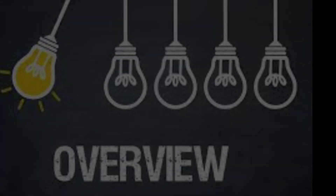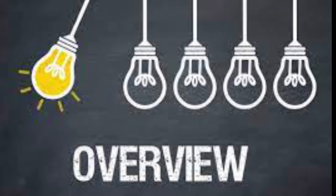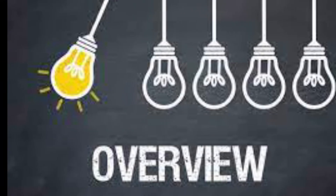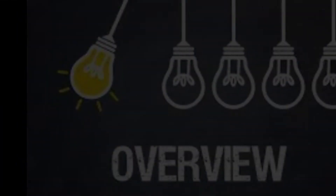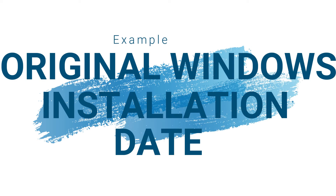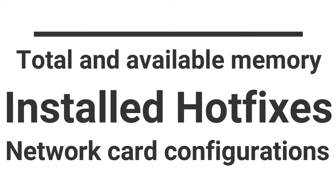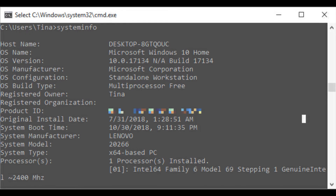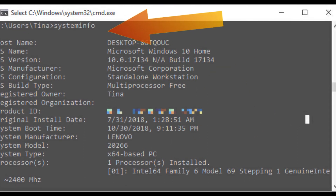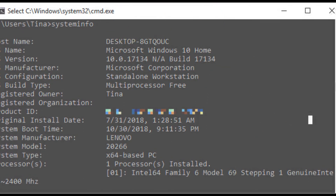The sixth command is systeminfo. This command gives you a detailed configuration overview of your computer, covering your operating system and hardware. For example, you can look up the original Windows installation date, the last boot time, your BIOS version, total and available memory, installed hotfixes, network card configurations, and more. Use systeminfo /s followed by the hostname of a computer on your local network to remotely grab the information for that system.